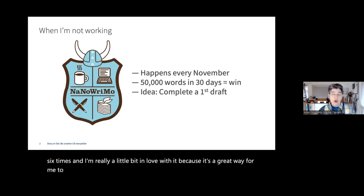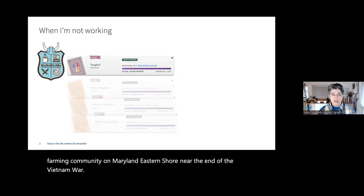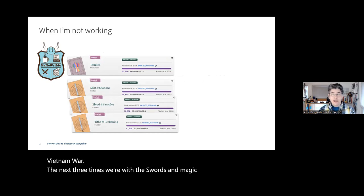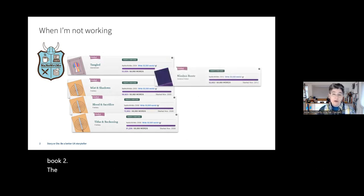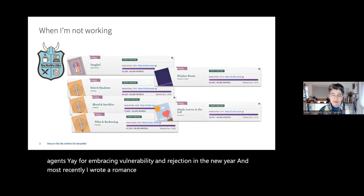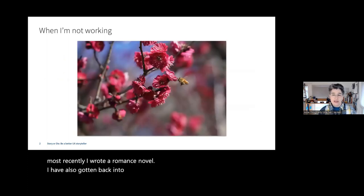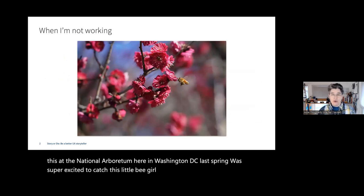I really love NaNoWriMo because it's a great way to get a finished first draft out of my head and onto paper. My wins include a family drama set in a dying farming community on Maryland's Eastern Shore near the end of the Vietnam War, a swords-and-magic fantasy trilogy — yes, there is a dragon, but it doesn't show up until the very beginning of book two — a space opera I'm currently pitching to agents, and most recently a romance novel. I've also gotten back into photography; I took this shot at the National Arboretum last spring and was excited to catch a little bee doing her thing with some early spring flowers.